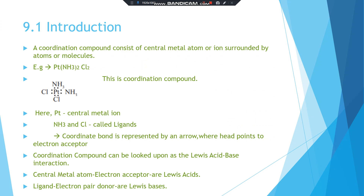Introduction: a coordination compound consists of a central metal atom or ion surrounded by atoms or molecules. For example, platinum(NH3)2Cl2 is a coordination compound in which the central metal is platinum. This metal ion is surrounded by two ammonia molecules and two chloride ions.